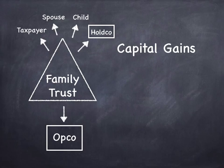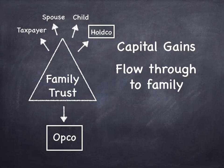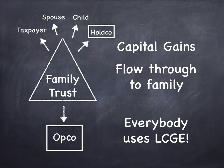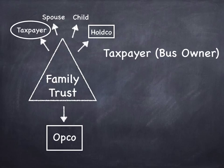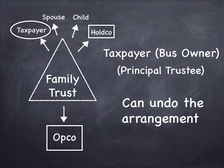Benefit number three: the capital gains flow through to the family members, which potentially gives everybody a chance to use their lifetime capital gains exemption. This is the favorite way tax practitioners involve multiple people in terms of taking advantage of their capital gains exemption. If you have five beneficiaries, five times $800,000 is $4 million — that's a lot of money flowing in tax-free. Benefit number four is that the taxpayer, the business owner as trustee, can undo the arrangement if necessary. It's a structure that can be unwound if needed.